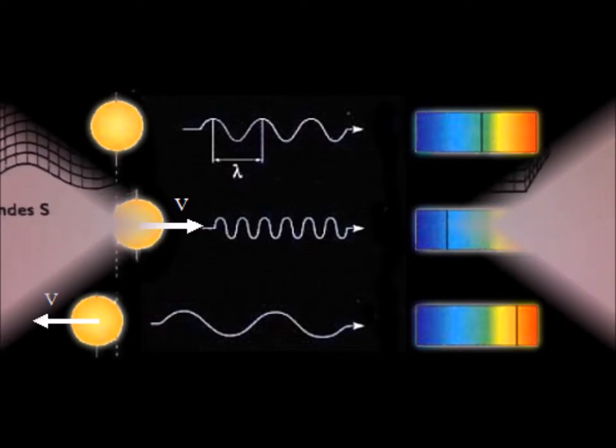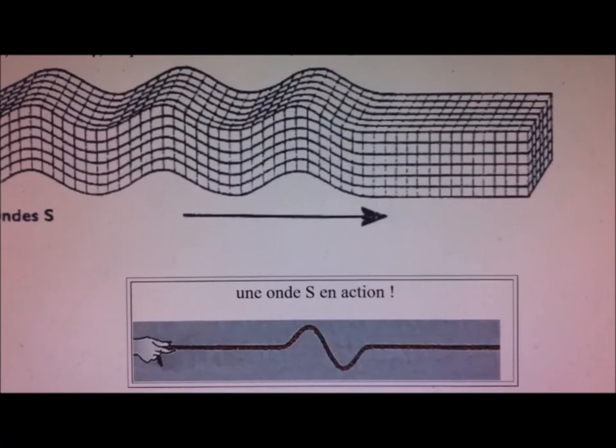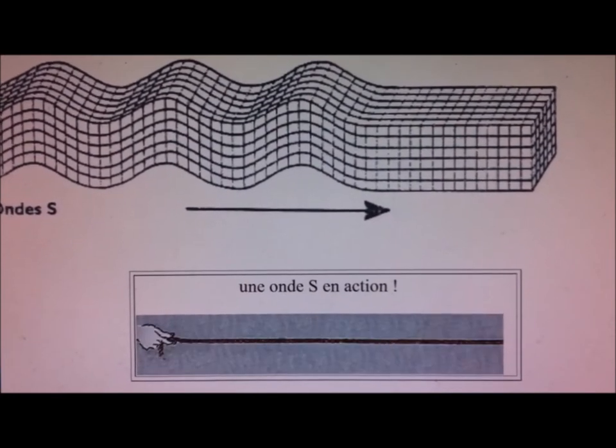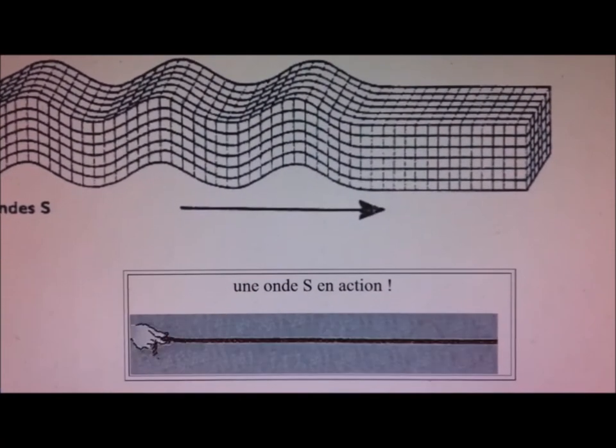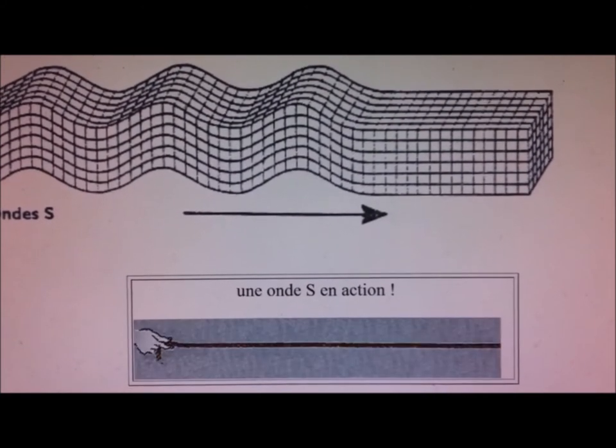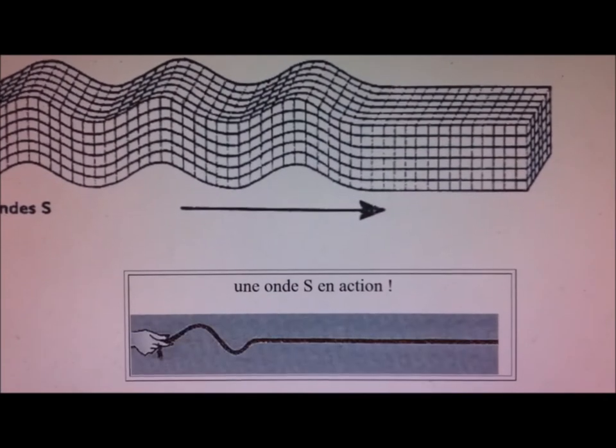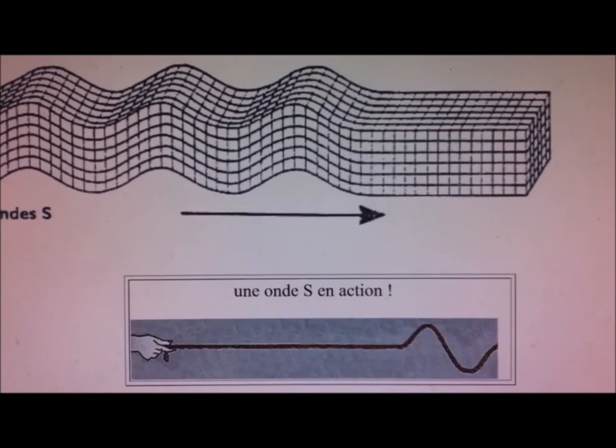The consequence of the discovery of polarization was to attribute a transverse nature to luminous vibrations. But only solids can carry such waves. The ether then became a solid filling space.